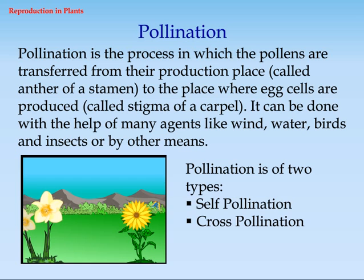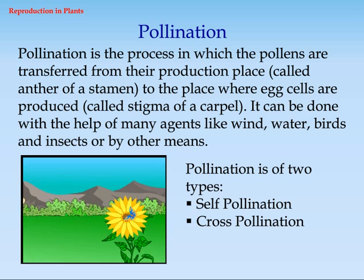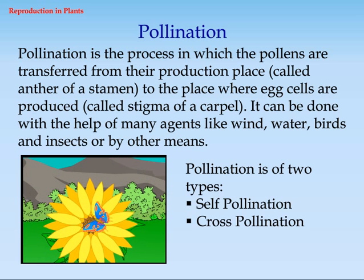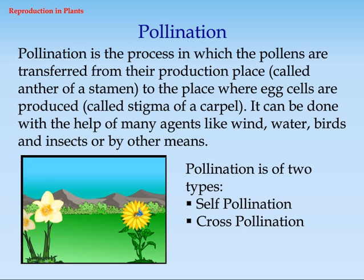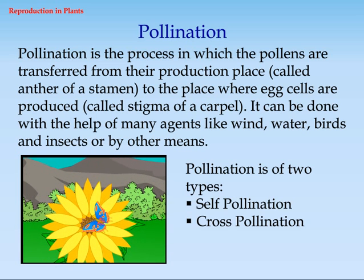Pollination. Pollination is the process in which the pollens are transferred from their production place, called the anther of a stamen, to the place where egg cells are produced, called the stigma of a carpel. It can be done with the help of many agents like wind, water, birds and insects, or by other means.